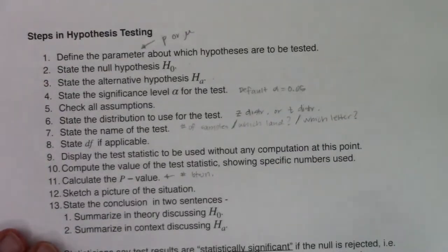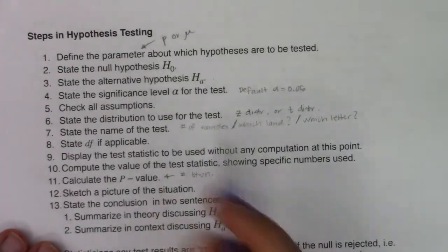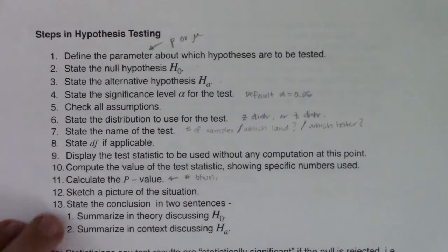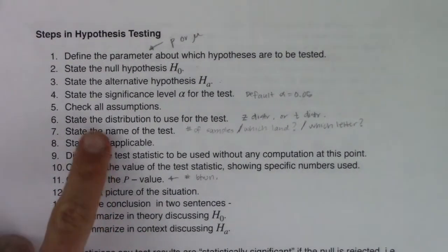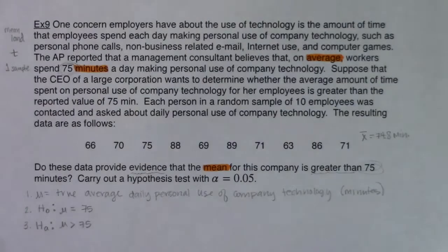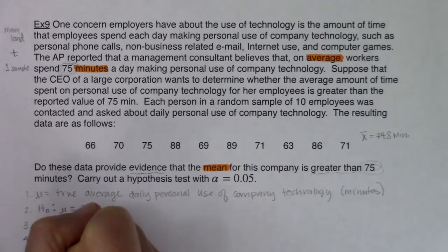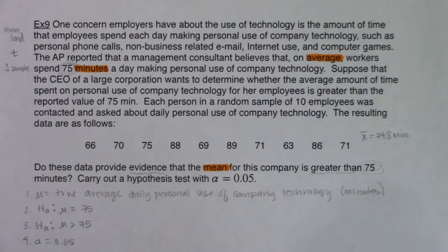Step four: significance level. I was given an alpha level of 5%, so my alpha is 0.05 — the industry standard. Step five: check assumptions. Let's go through the assumptions for mean land.